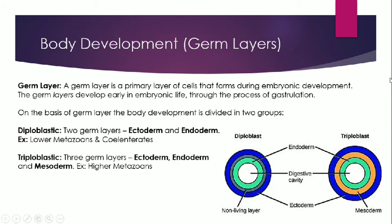The next important topic is body development, specifically germ layers. A germ layer is a layer formed during cell division when a zygote transforms into an embryonic stage, formed by the process of gastrulation. On the basis of germ layers, a body is divided into two groups: diploblastic and triploblastic. Diploblastic animals have two layers — ectoderm (outer layer) and endoderm (inner layer) — generally found in lower metazoans and coelenterates. Triploblastic animals have three germ layers — ectoderm, endoderm, and mesoderm (the middle layer) — generally found in higher metazoans.